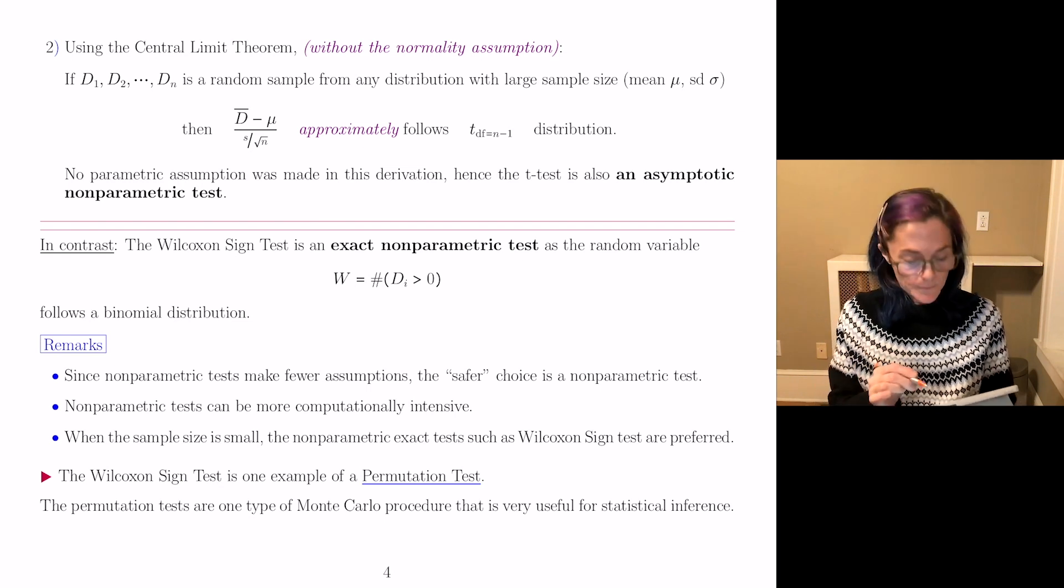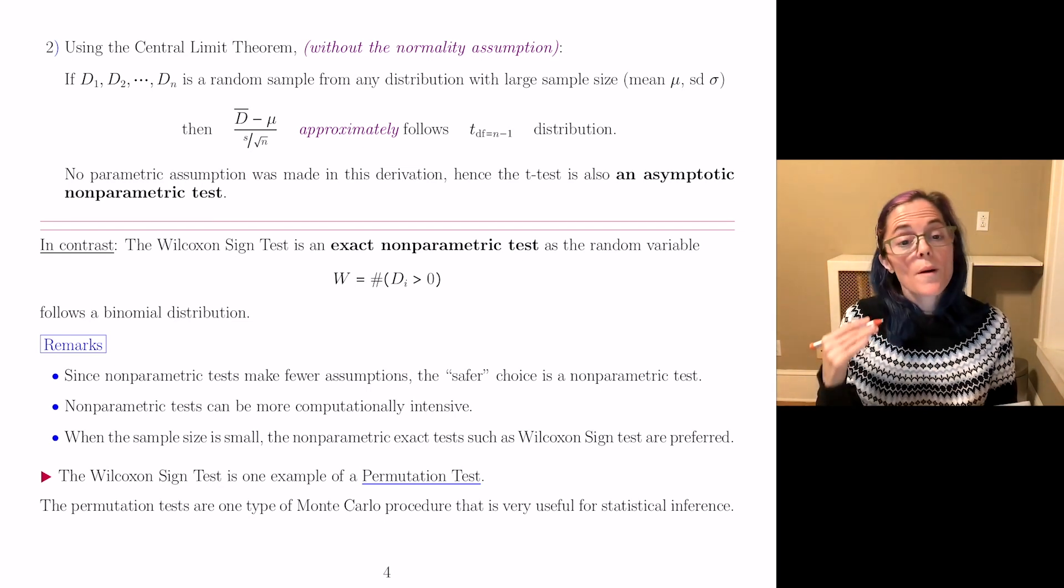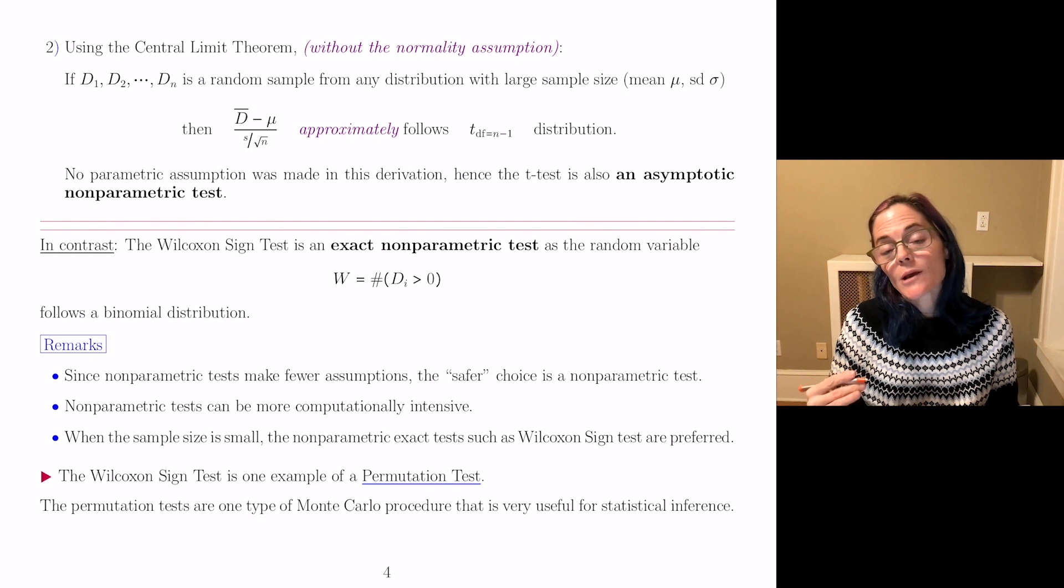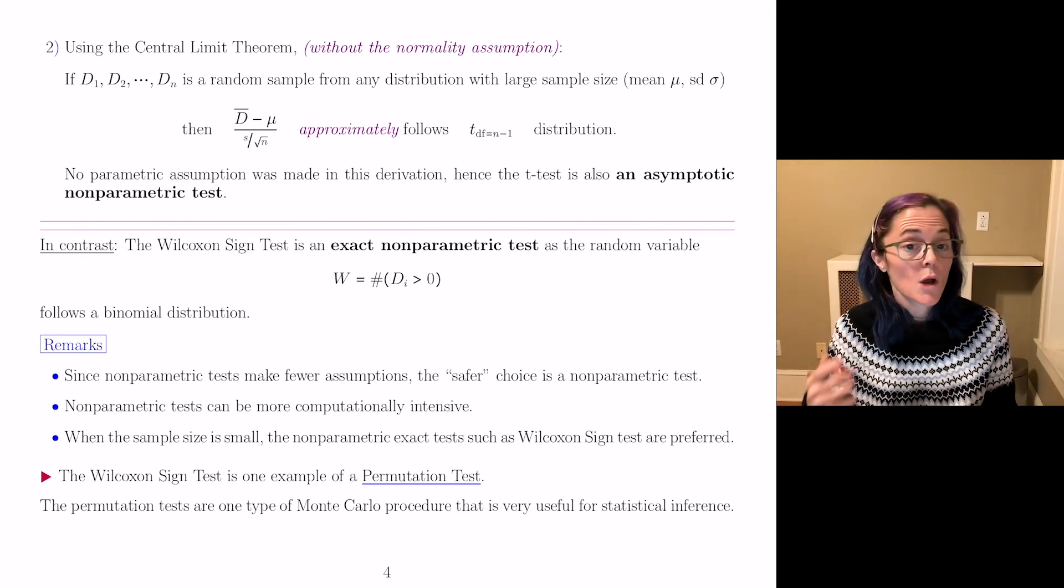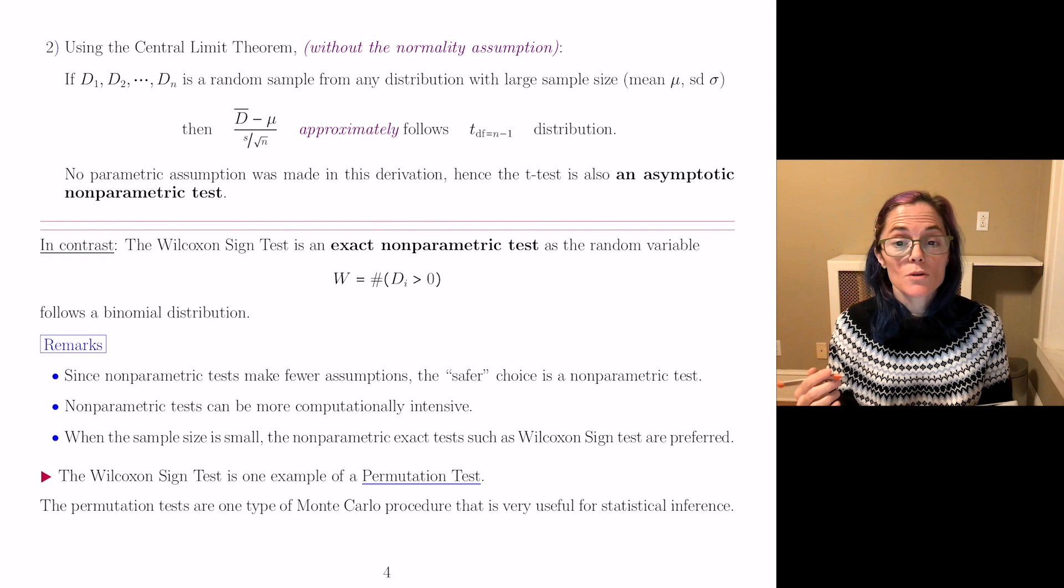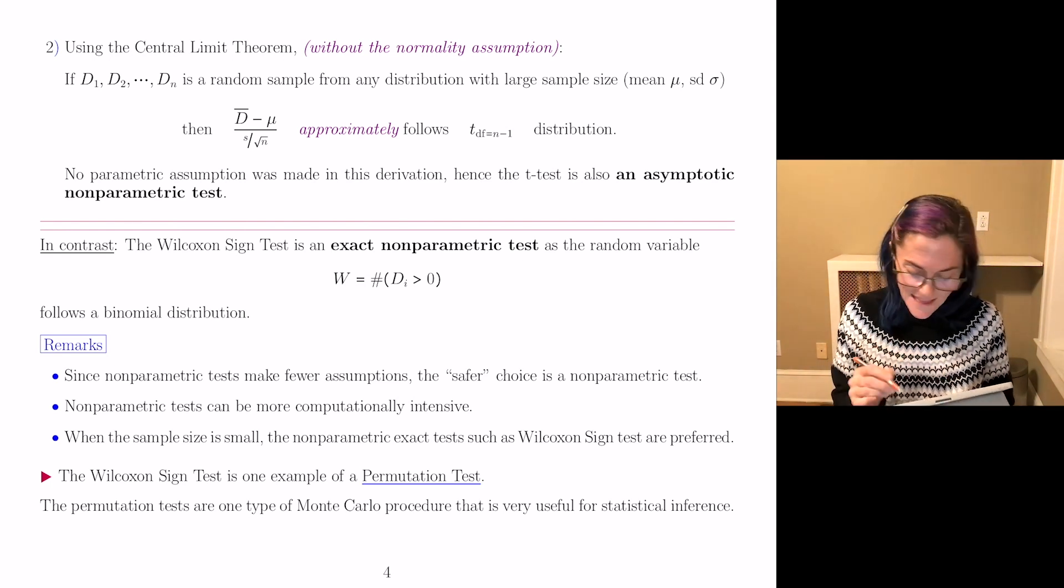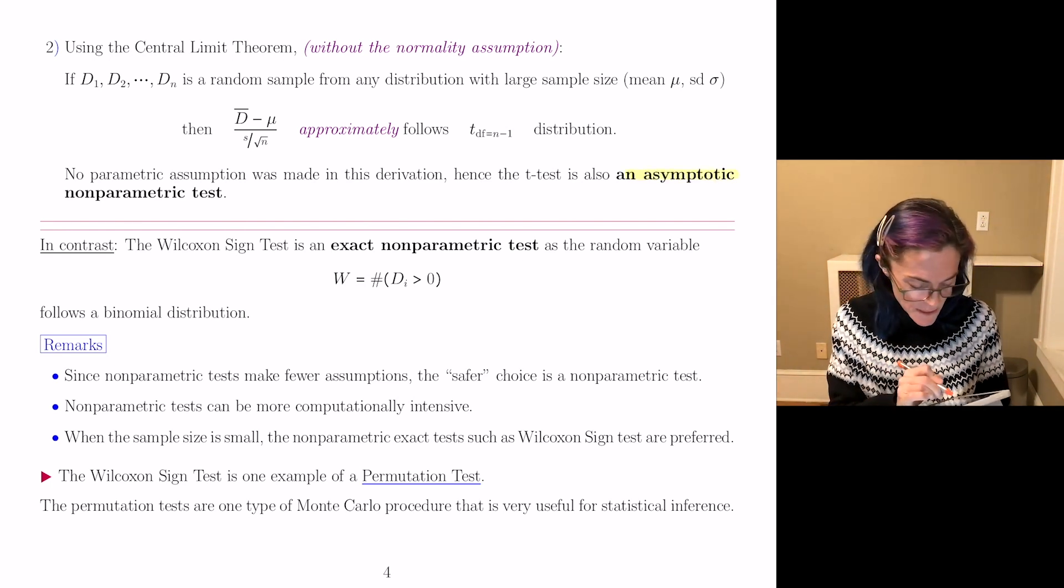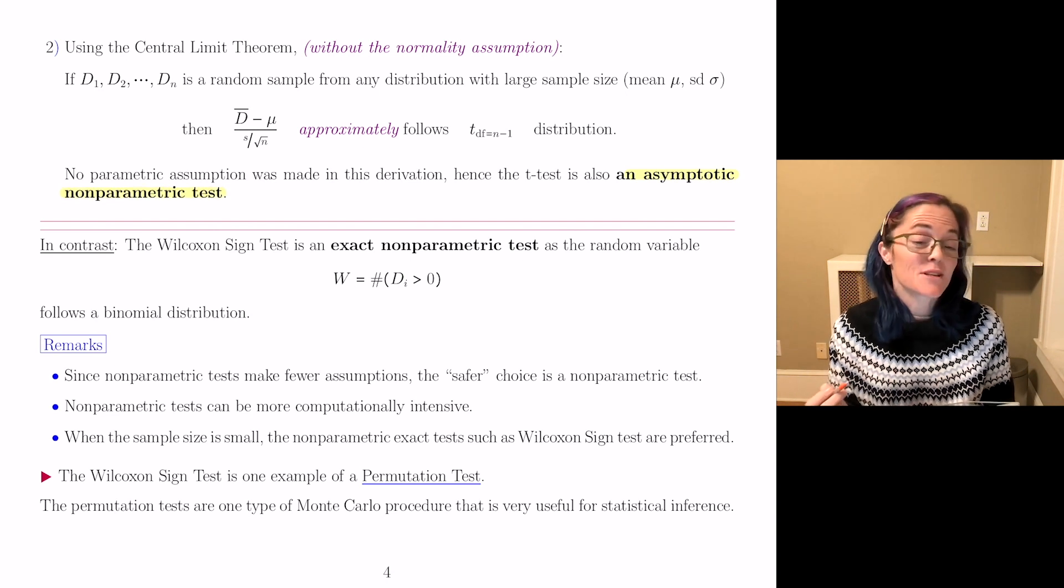In this derivation, there are no parametric assumptions made, meaning we did not assume we had a random sample from the normal distribution. Therefore, the t-test is also an asymptotic nonparametric test.